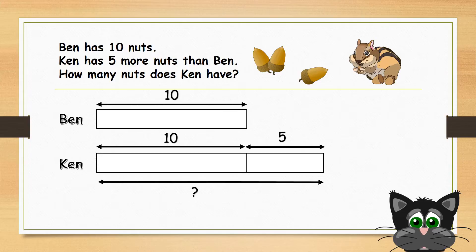So in order to find how many nuts Ken has, we need to add the number of nuts Ben has and the 5. 10 plus 5 equals 15. Hence Ben has 15 nuts.